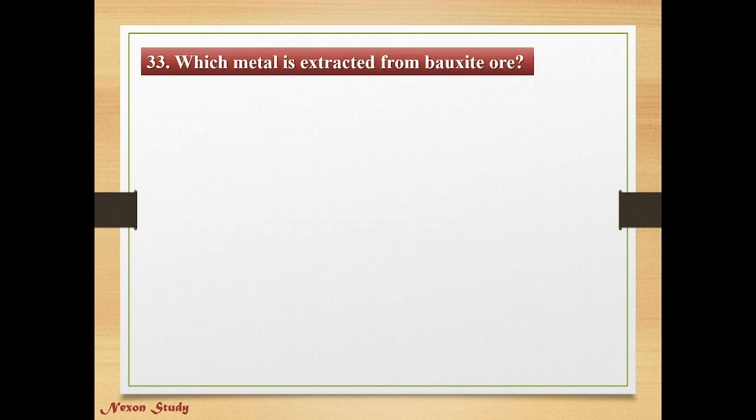Question: Which metal is extracted from bauxite? Options: zinc, brass, copper, aluminum. Correct answer is aluminum.